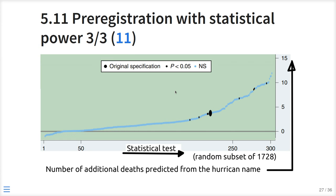Here is how the specification curve looks. On the x-axis you see 300 randomly sampled tests from the 728 they ran. On the y-axis you see the number of additional deaths predicted from the hurricane name being masculine. Each blue dot is an effect size when not significant; black dots are significant results. Only 8 out of 300 times was a significant effect found. The big dot was the specification they chose. So if they had found a significant effect, you could still say: maybe this was a weird choice we made, because overall it is not significant.